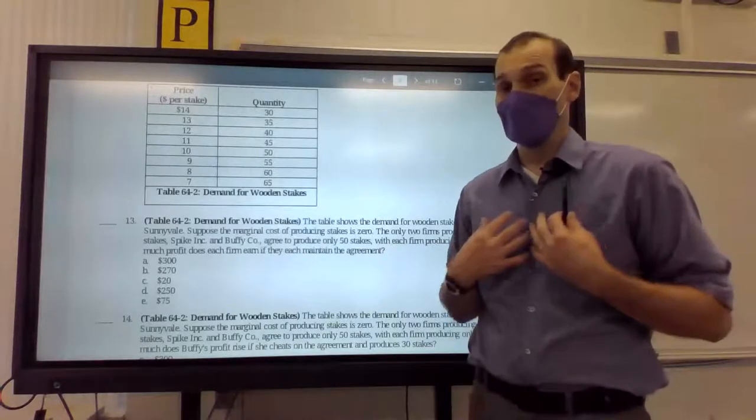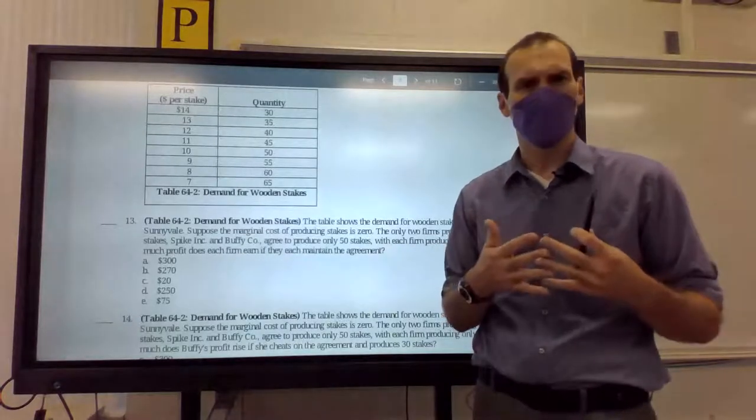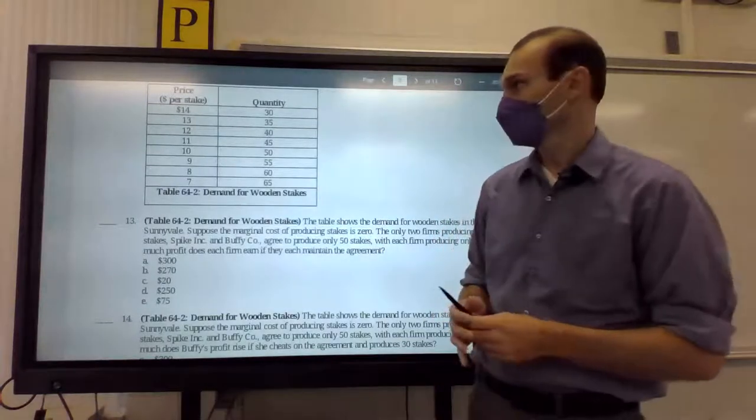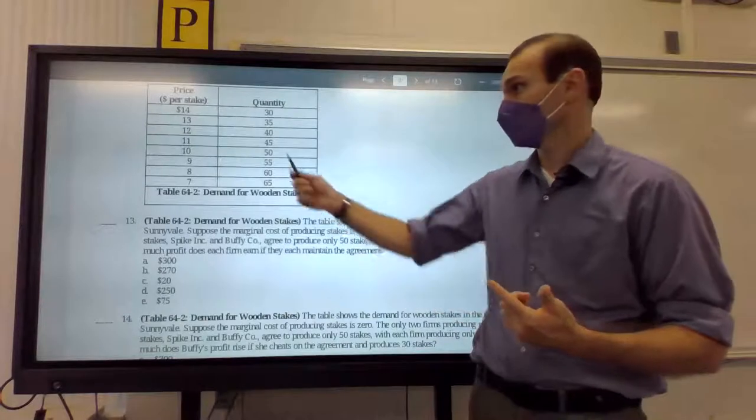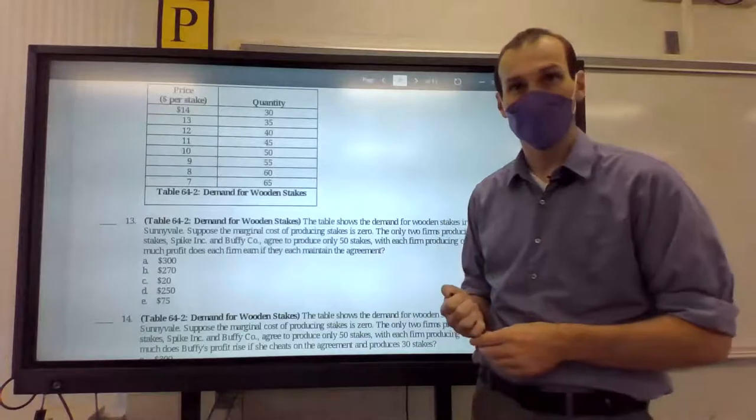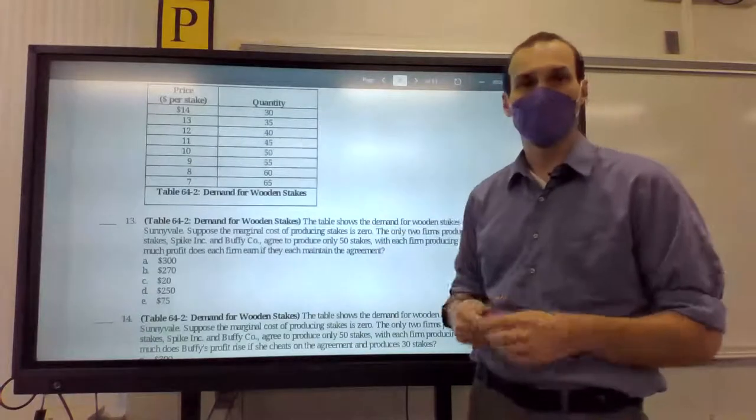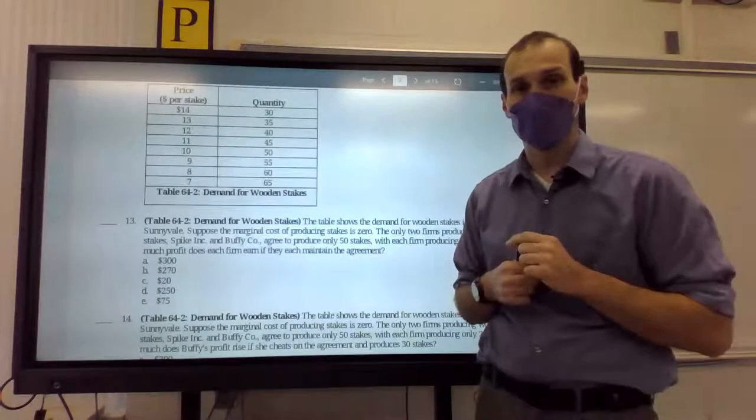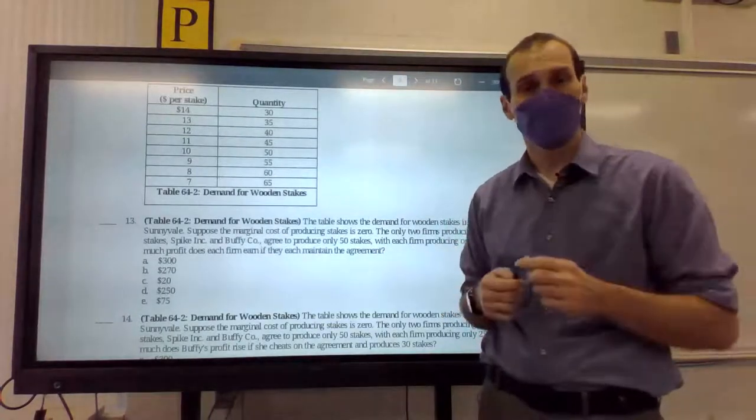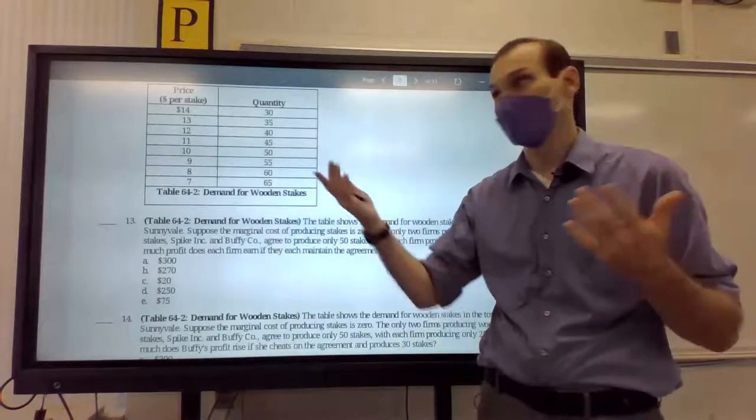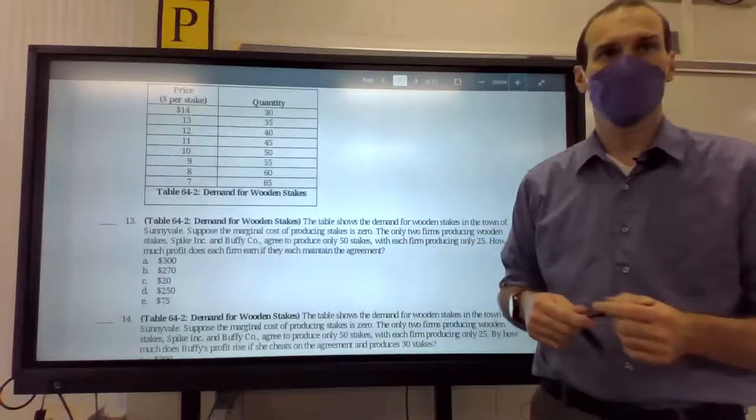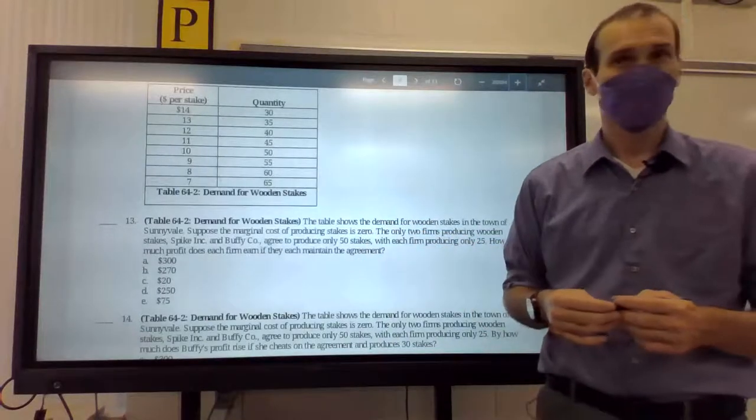How much profit does each firm earn if they each maintain the agreement? So, they make 50 stakes. If I make 50 wooden stakes, I want to know what's the most I can sell them for so I can sell all of the stakes. So, what's the price of 50 wooden stakes? 10. Oh, okay. That's actually pretty easy then. So, $10 a stake. I made 25. Spike made 25. And we're already solved there because I made 250 bucks. 25 stakes for $10 each. That's my profit because, again, we're at a zero cost firm.